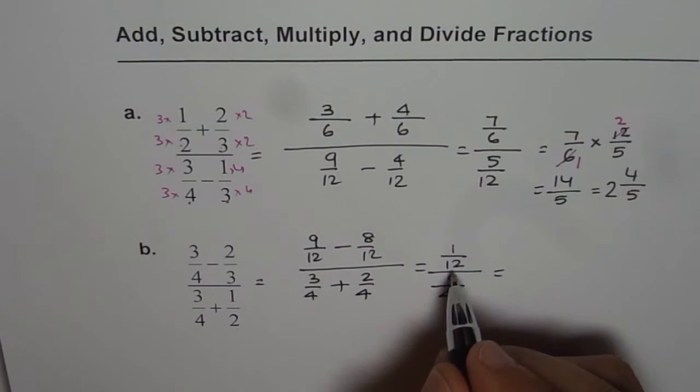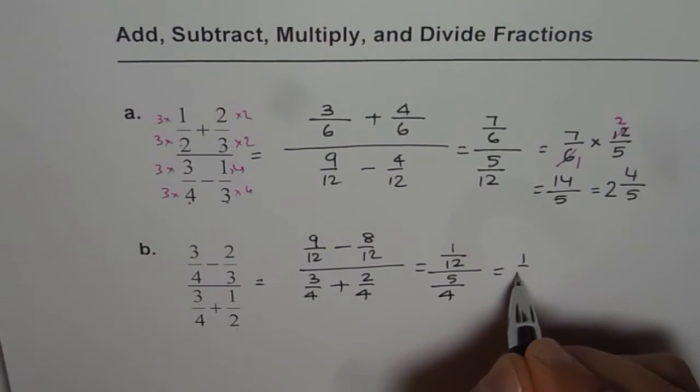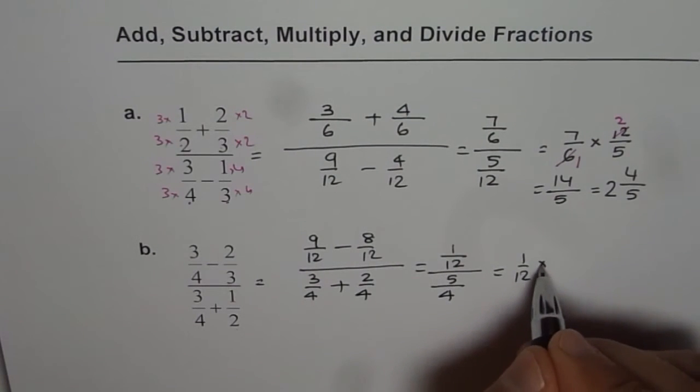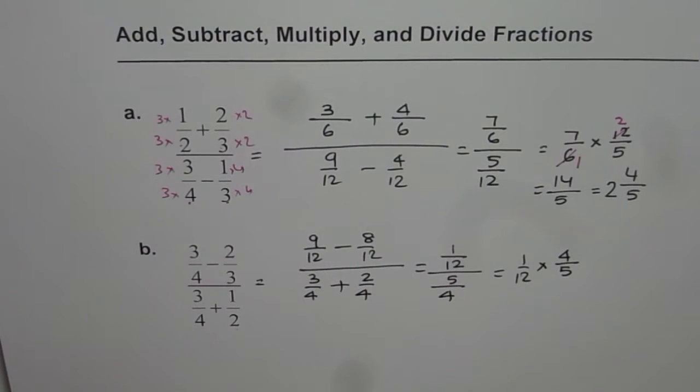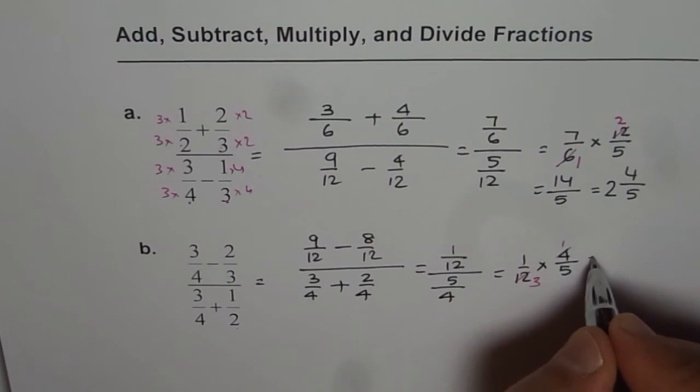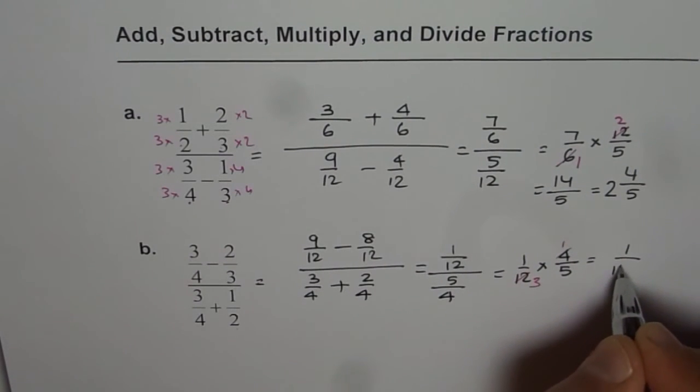Now we have 1 over 12 divided by 5 over 4, which is same as multiplied by 4 over 5. Simplifying, dividing by 4, we get 3 and 1. So the answer is 1 over 15.